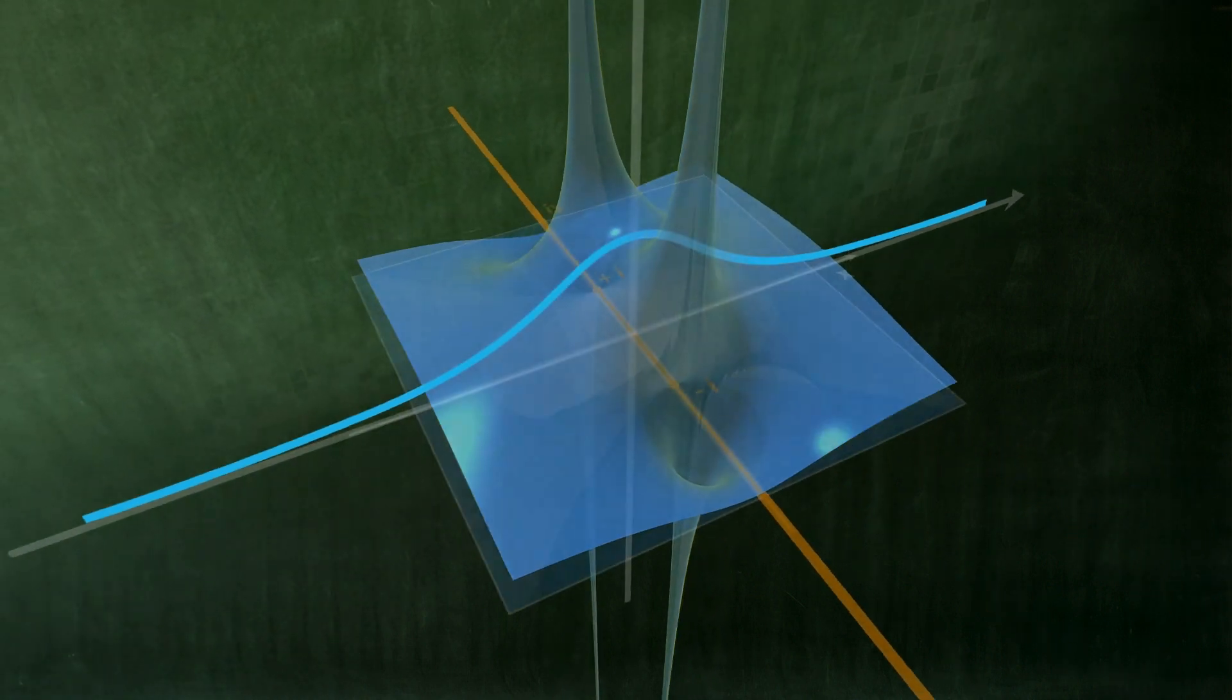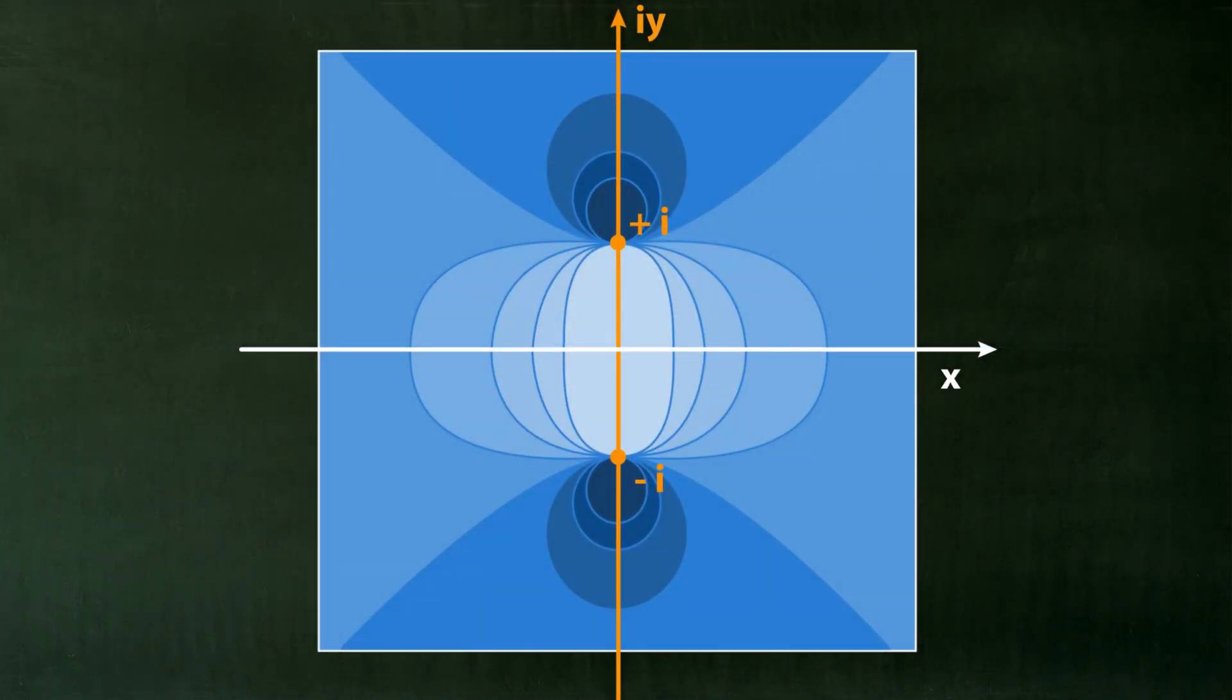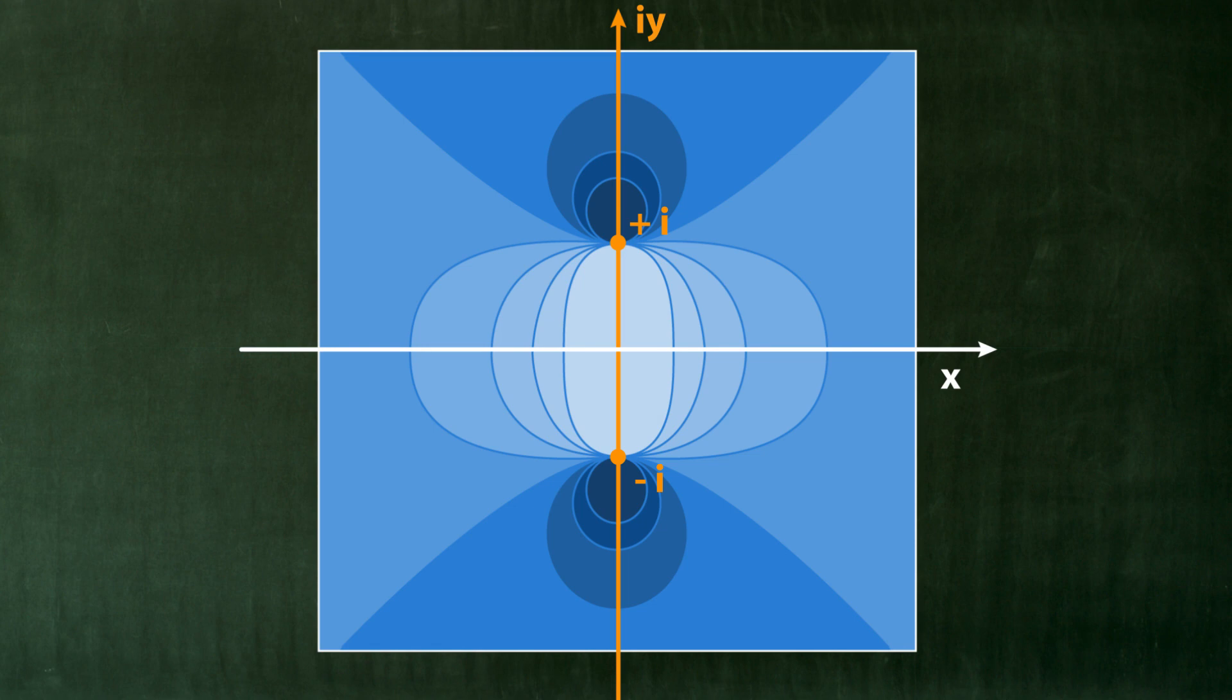Consider the altitude lines of the mountain landscape here to start with for the real part. Near the singularities at plus minus i, the altitude lines become increasingly dense.